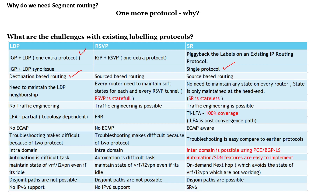RSVP and segment routing both are source-based, meaning the headend router decides which path to take. For LDP, we need to maintain the neighborhood between two routers or multi-hop routers. For RSVP, to set up those tunnels, we need to maintain soft state like path state block and reserve state block on each router. RSVP is stateful because it maintains all those states. But with segment routing, we don't need to maintain any state on the middle routers — only state will be on the headend routers which decide where to forward.